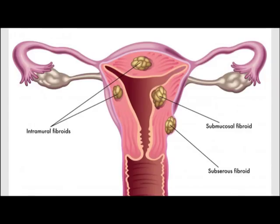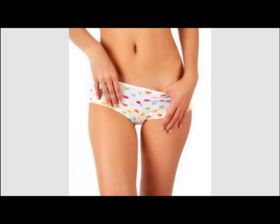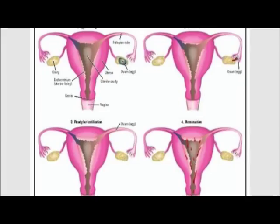During the secretory phase, the tissue left over after the egg is released — known as the corpus luteum — secretes estrogen and progesterone to act on the uterus and body. At this point in the cycle, if fertilization has occurred, estrogen and progesterone remain high.